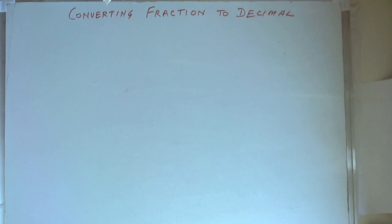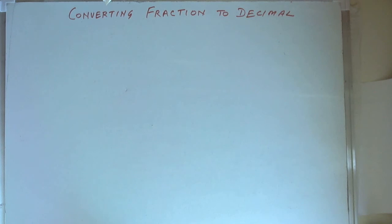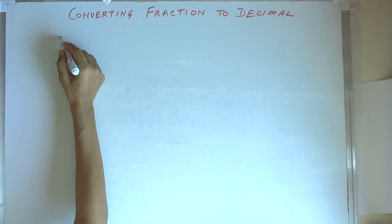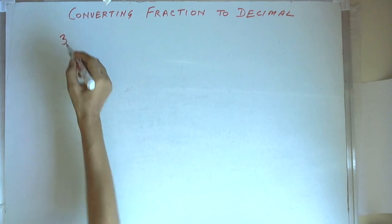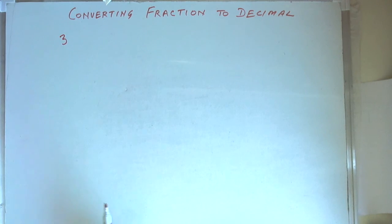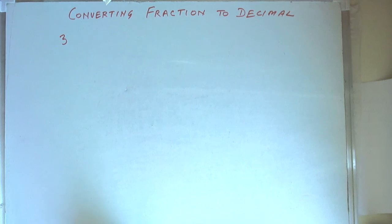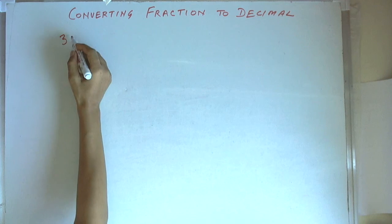Before we learn the method, let us first understand how 0 behaves. For example, we have a number 3. If we write a 0 on the right hand side, then this number will become 30.